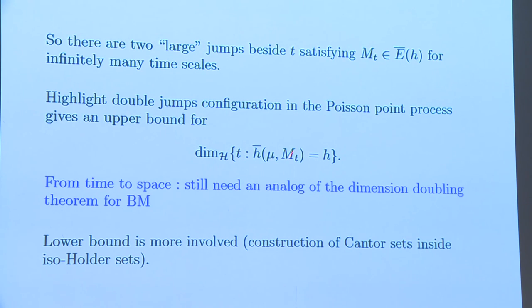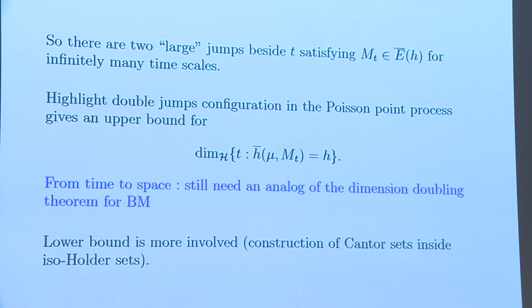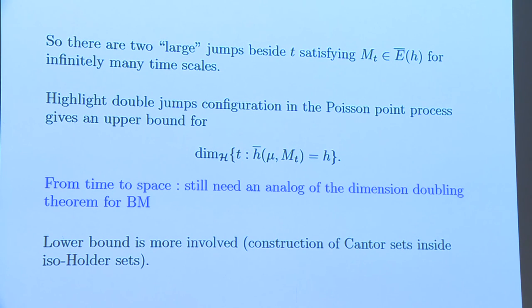In fact, we want to consider the set of x such that we have this regularity h. There's still a step from time to space. In this case, we will need an analog of the dimension doubling theorem for Brownian motion. The lower bound is much more involved. We're not going to talk about it. It concerns the construction of the Cantor sets inside iso-Holder sets.